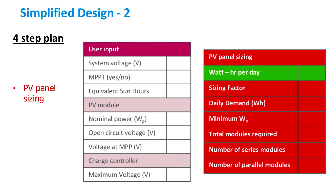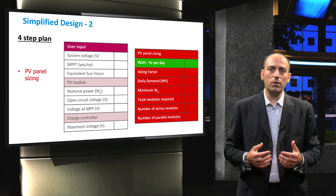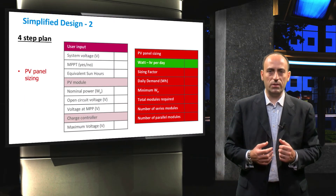You may notice the table on the left named User Input. In this table, you record the specifications of the PV system components. For example, the information about the selected system voltage, PV module specification, charge controller specification, and the presence of maximum power point tracking logic are recorded here. By providing this information, we can start sizing the PV system.